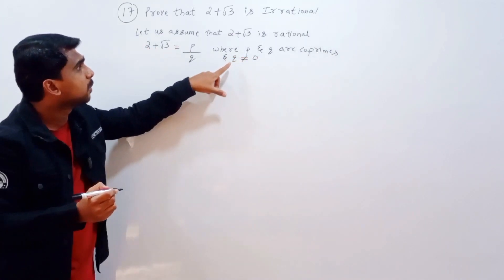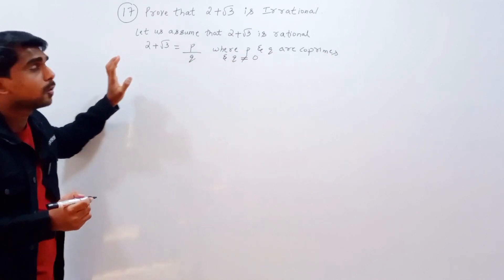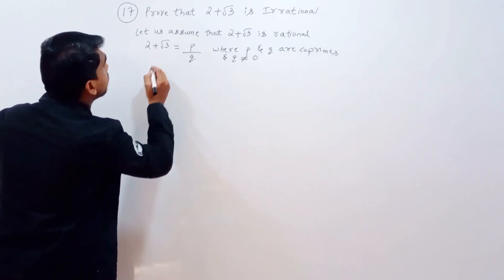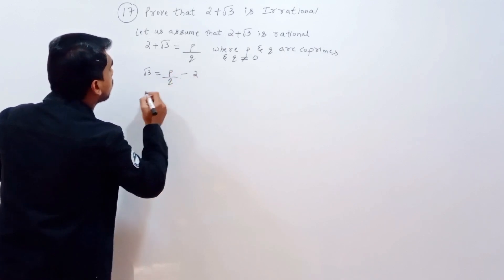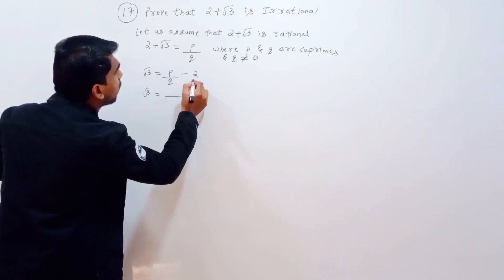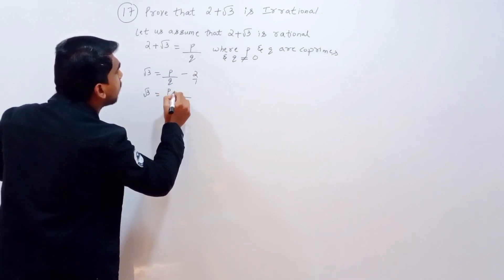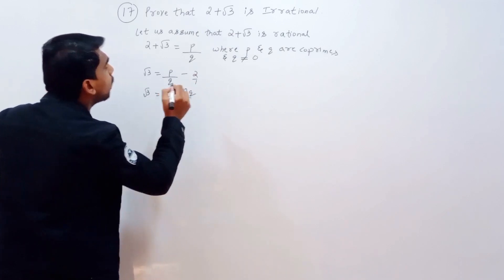So p and q are co-prime and q is not equal to 0. If 2 plus root 3 equals p by q, then root 3 equals p by q minus 2, which is p minus 2q by q.